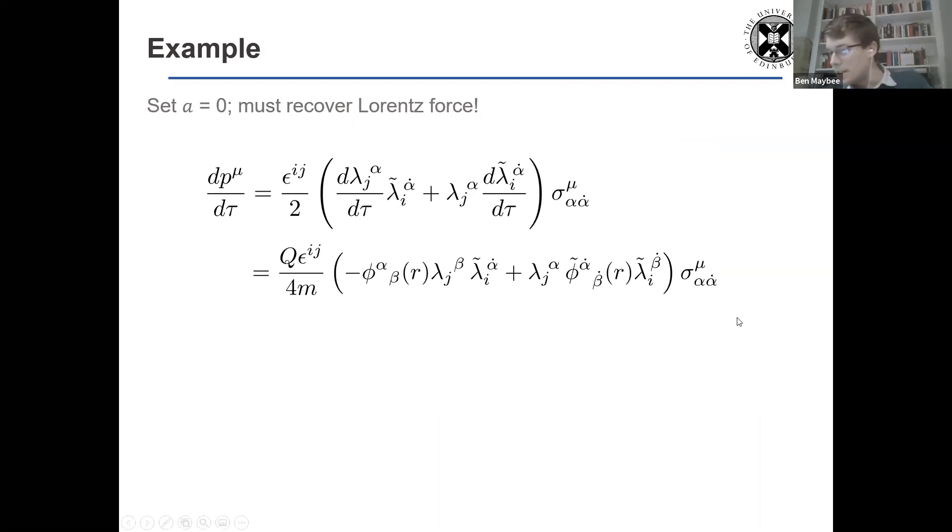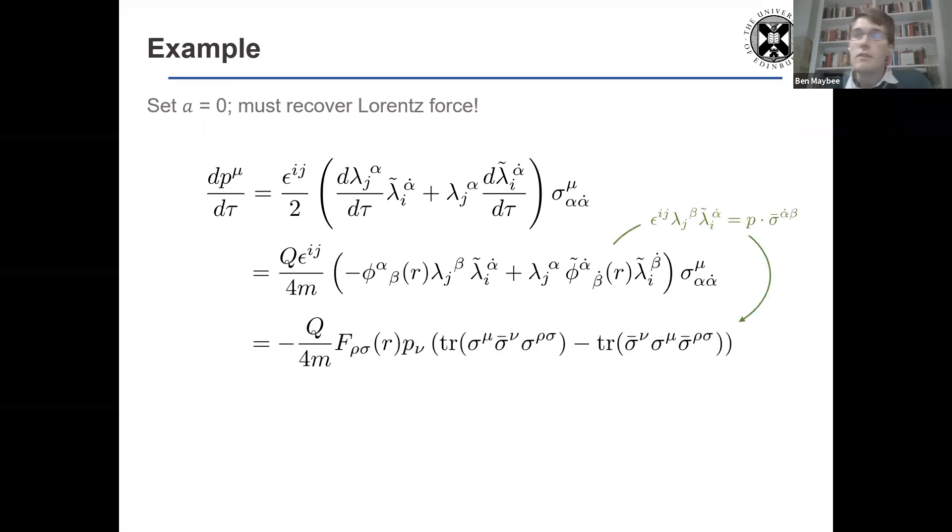And then note that because I have a metric contracted with two little group indices, I'm going to have a momentum, not a spin vector. So I can rewrite this thing in terms of vectors. We have the momentum and then the field strength pulling off sigma matrices.